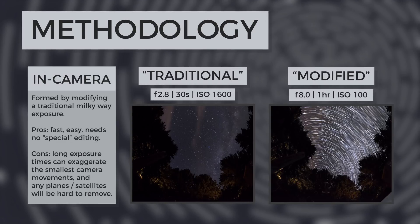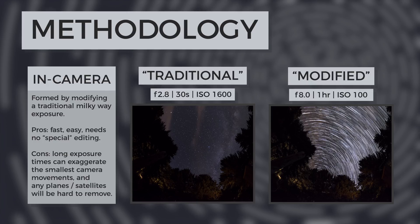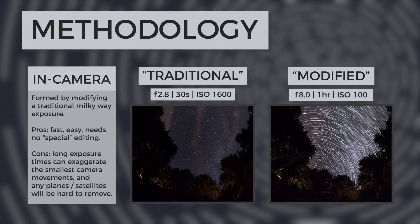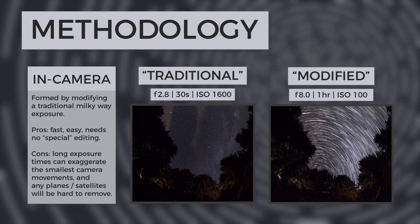In-camera star trails are created by the physical movement of the stars through a frame. Often, a normal night sky exposure is modified so the shutter can be left open for many minutes or hours, resulting in concentric streaks across the sky.